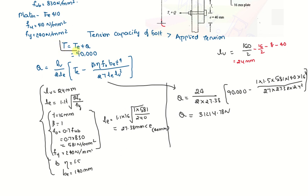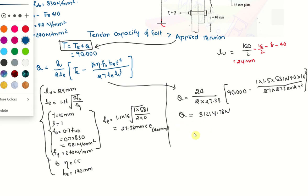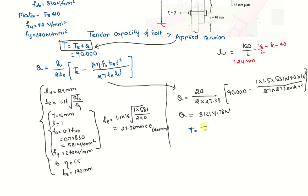So we have this Q. Now we can find out the applied tension. Applied tension. So that is T is equal to Te plus Q. Te we have 90,000 and Q we have this value 31214.78. So the total we will be getting it as 121214.78 Newton. So as a total applied tension.